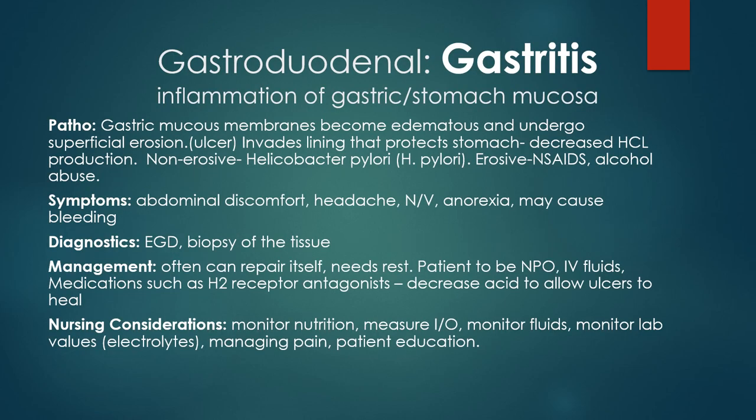Let's start with gastritis, which is inflammation of the gastric and stomach mucosa — that lining in your stomach. This is a common GI disorder and it can be acute, where it lasts for a few days, or chronic, which results from repeated exposure to irritating agents or recurring episodes of acute gastritis. It can be classified as erosive or non-erosive — as in it's eating away at that mucosal lining of the stomach and causing bigger issues.